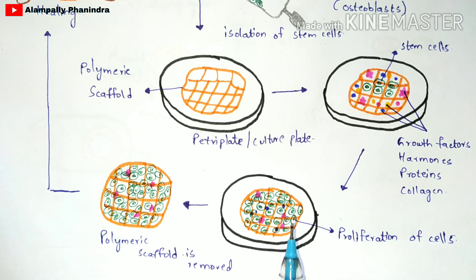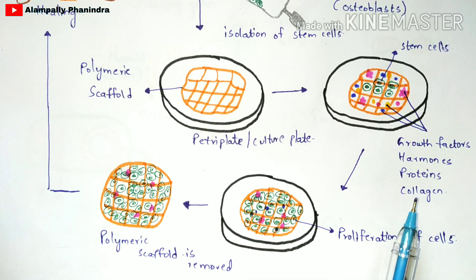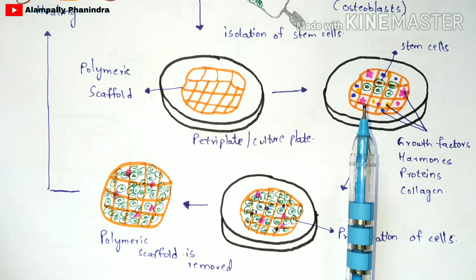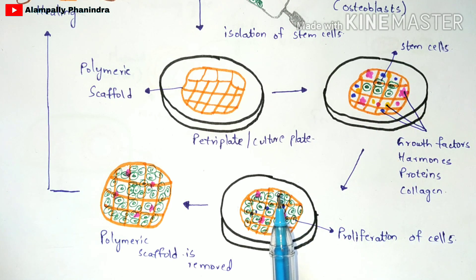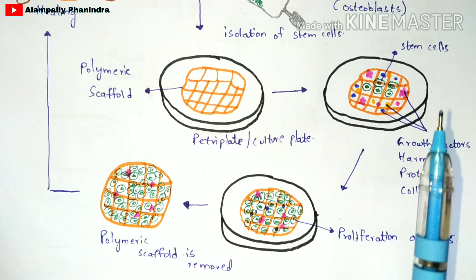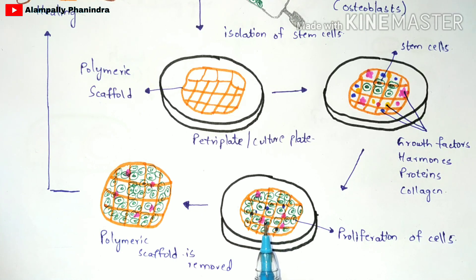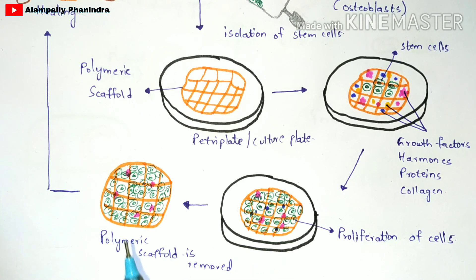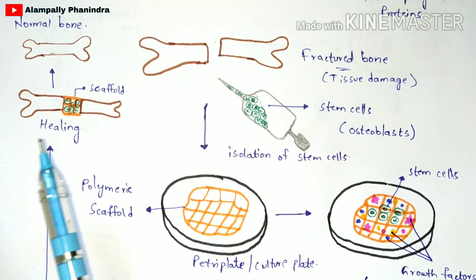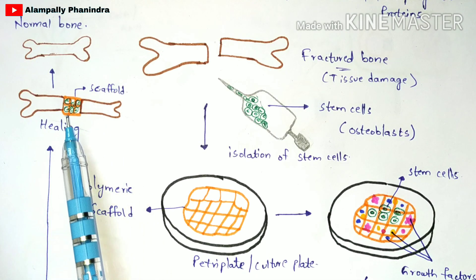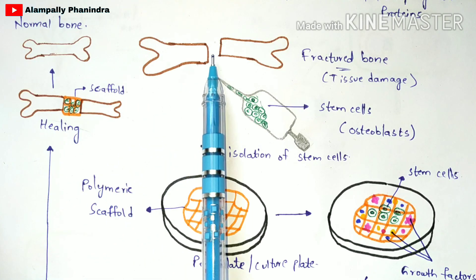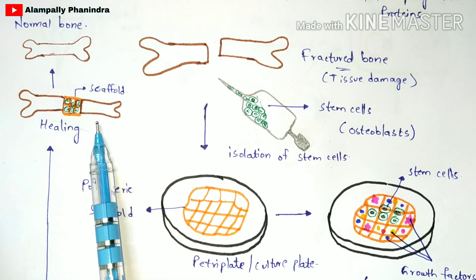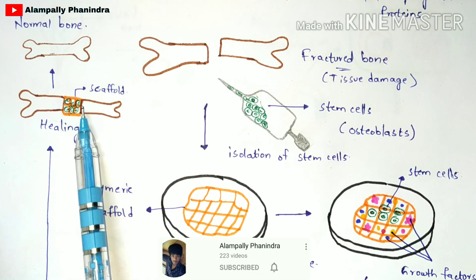In the next step, remove the polymeric scaffold from the petri plate. The scaffold now contains a large number of stem cells. The growth factors and signaling molecules have decreased because the stem cells consumed them during growth. Now take this polymer scaffold — with the stem cells — and apply it to the fractured bone at the exact site of the fracture.